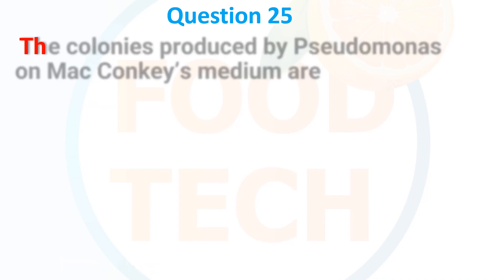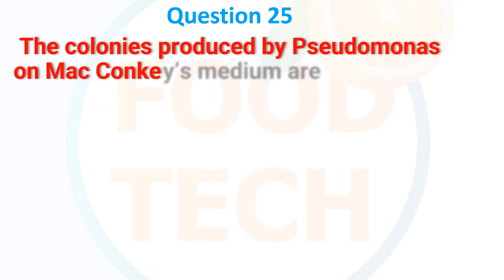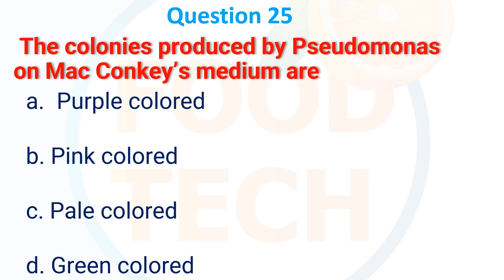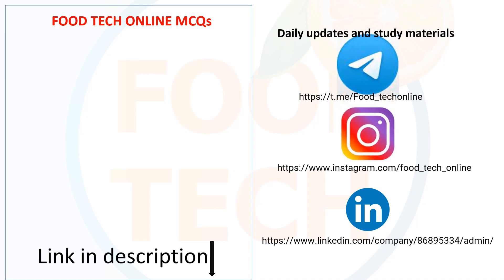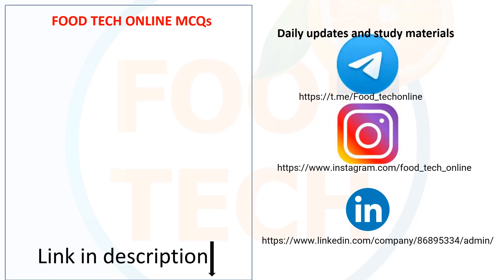The colony produced by Pseudomonas on MacConkey media is: A. Purple color, B. Pink color, C. Pale color, D. Green color. The answer is C: Pale color. For more videos, link in description. For daily updates and study material, follow our Telegram, Instagram, and LinkedIn pages. Subscribe to our channel and share with your friends. Thank you.